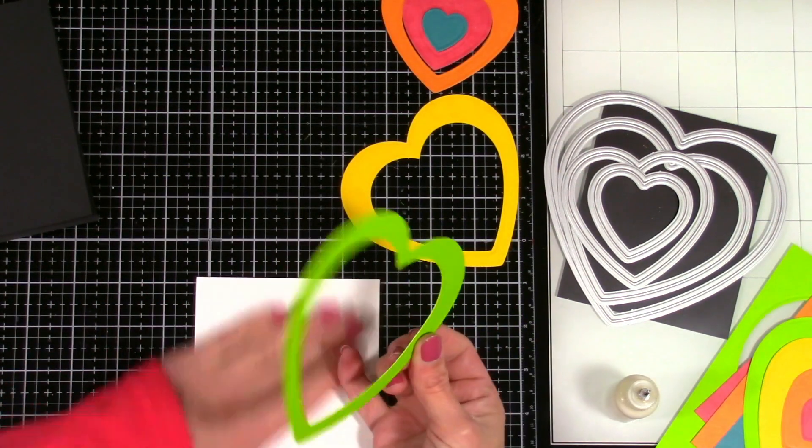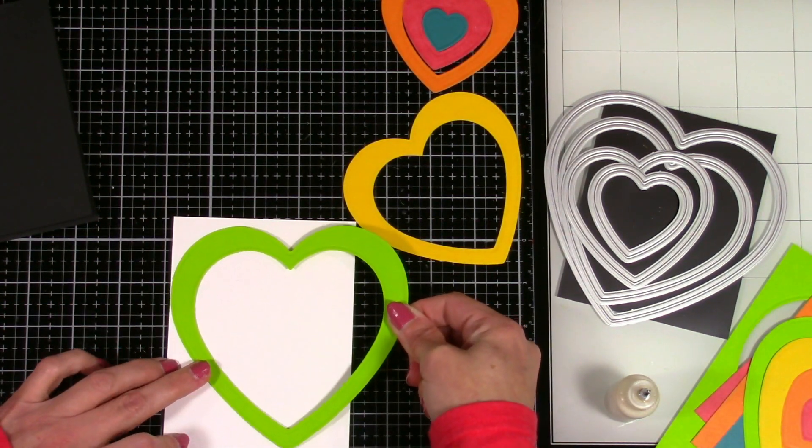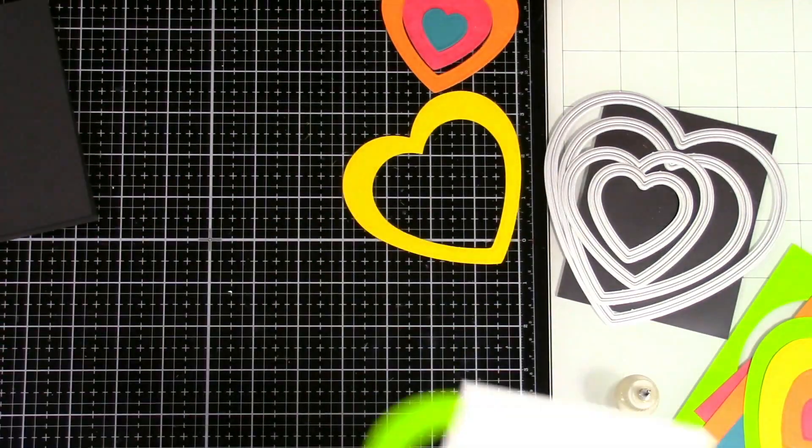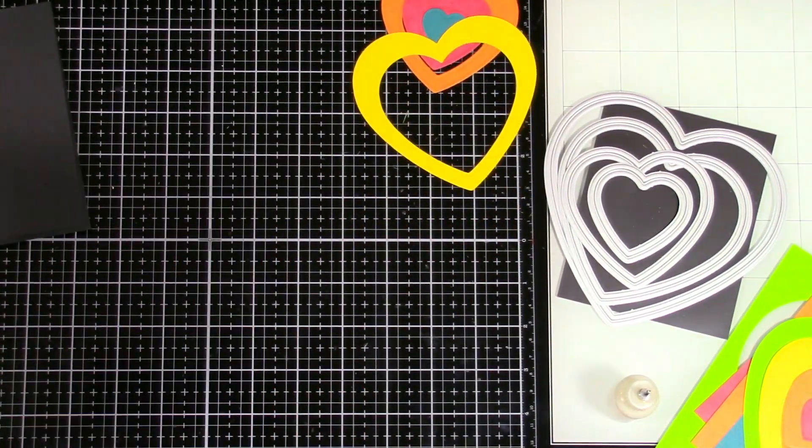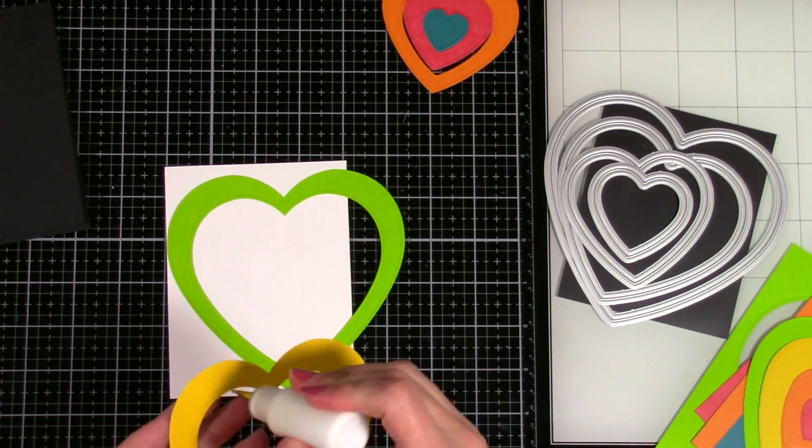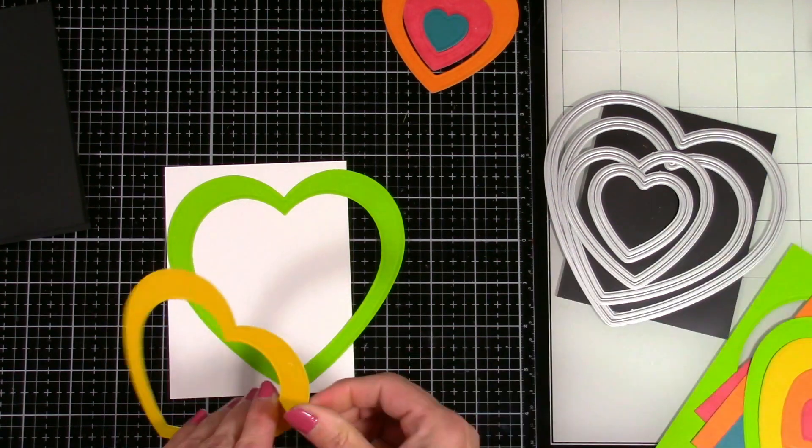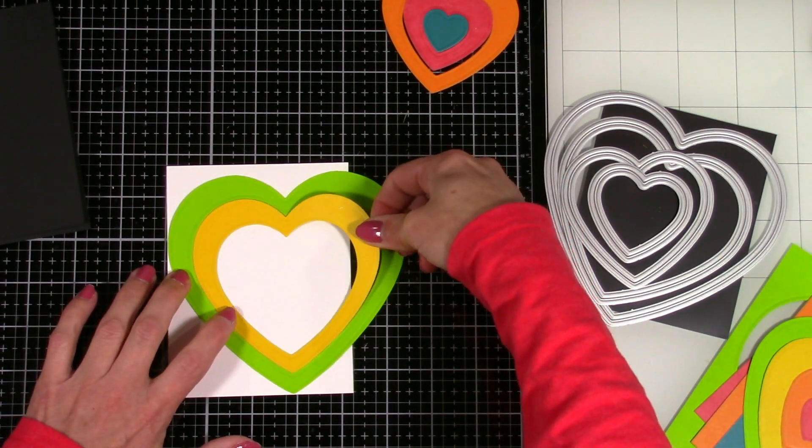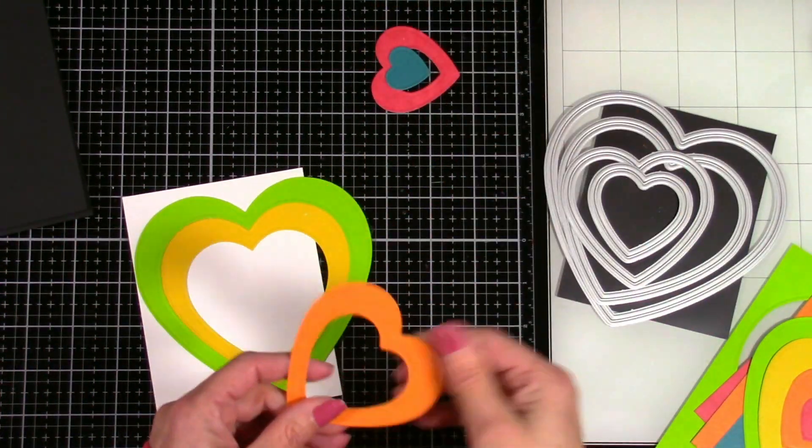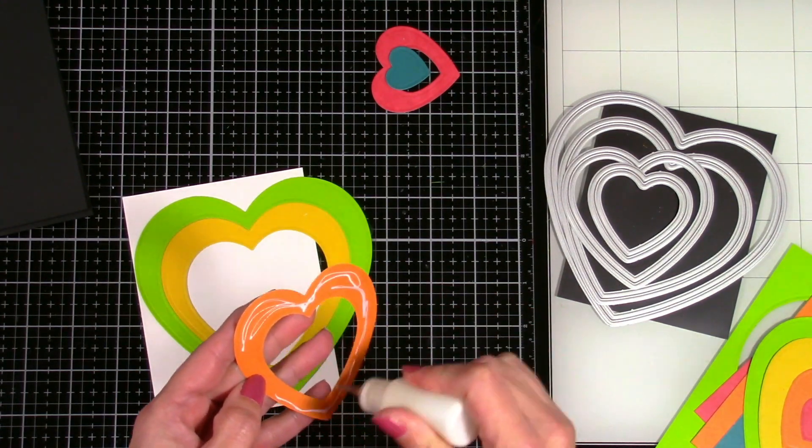So now we're just going to glue them down to our panel. And you don't want to put the panel on the card base until after you get these all put into place because you're going to want to trim off anything that's hanging over. Since my panel is slightly smaller than my card base, that would be really hard to do if that was attached to the card. I'm using glue because it gives me just a second in case I don't get it exactly where I want it. I can kind of smush it around and make it fit.